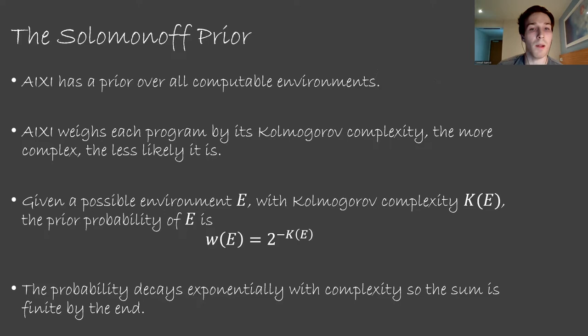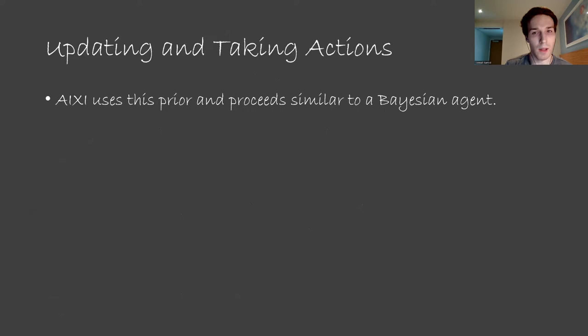If this seems complicated, the main point is that there is a prior distribution that doesn't assume anything about the environment specifically, but captures the intuition that simpler is more likely. So that's how it sets up its prior. How does it update when it gets new evidence? ICSI updates very similar to a Bayesian agent. It removes all hypotheses that are no longer consistent with the data, but it doesn't weigh them based on likelihood of prediction.